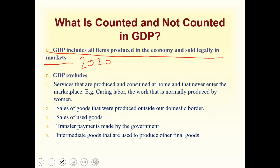For example, in the case of jeans, the thread is an intermediate good and is not included in GDP. Only the final market price of the jeans is included in GDP — not the price of the threads or anything in between. All of those intermediate goods are not part of GDP.